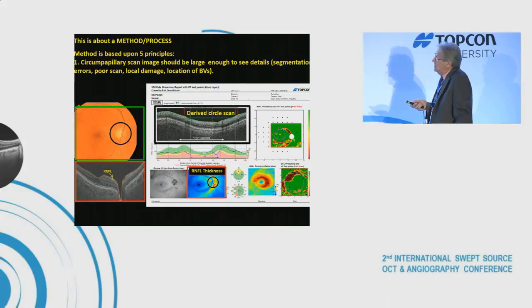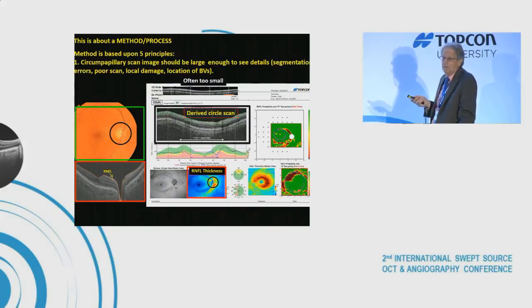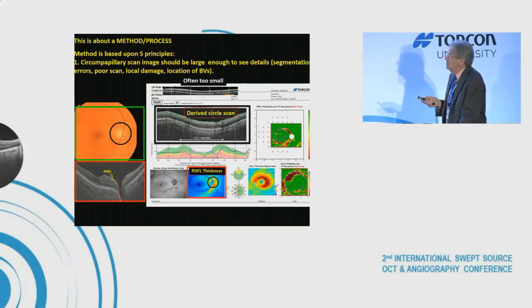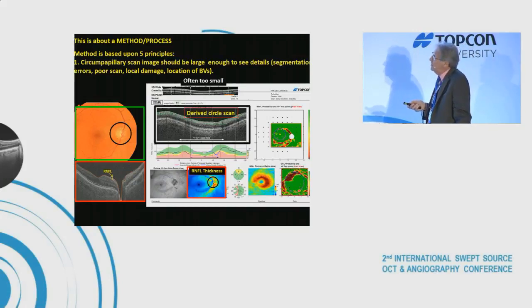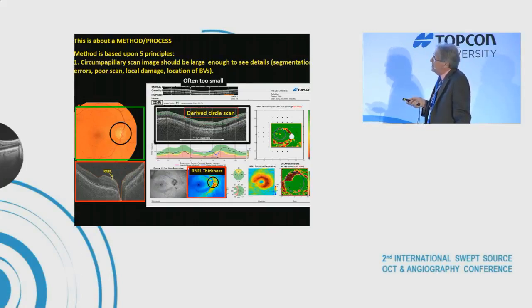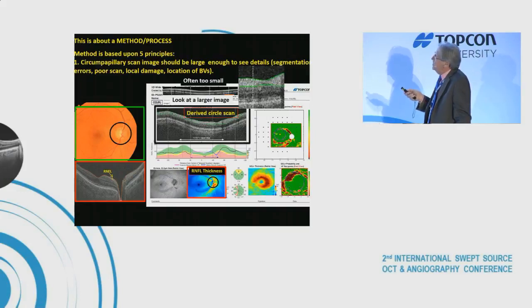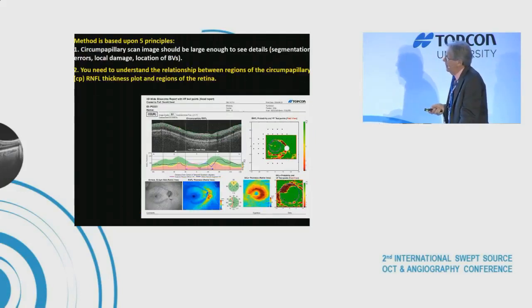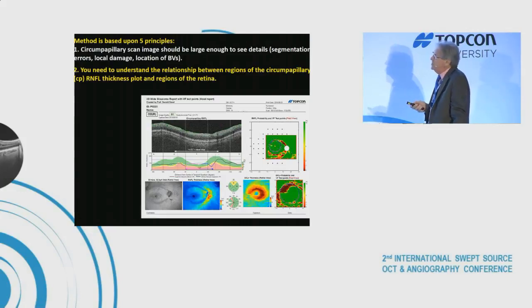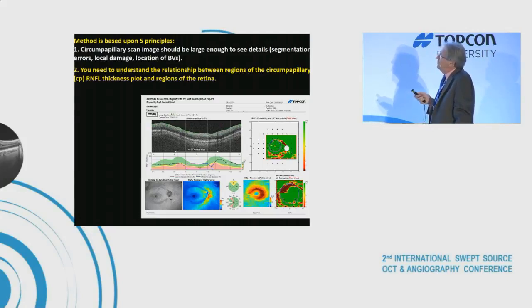On most machines, the circumpapillary image appears very small on glaucoma reports — not much use. You want it large enough to see segmentation errors, identify poor scans, locate blood vessels, and clearly see tissue loss. When you blow it up, you can see in this case there's almost no tissue left — that's where the damage is.